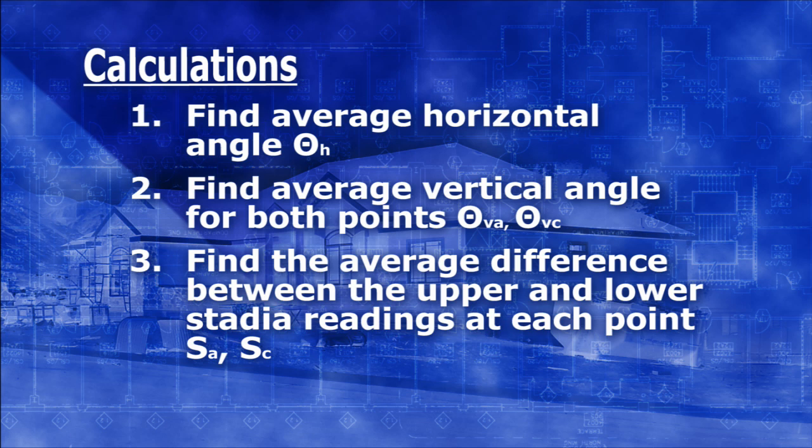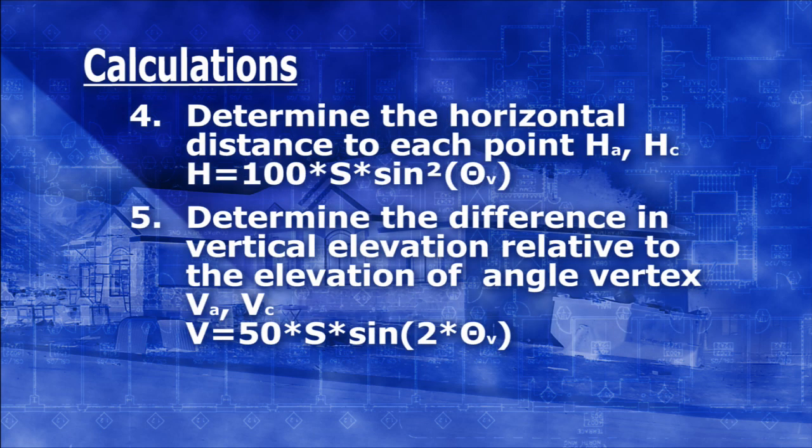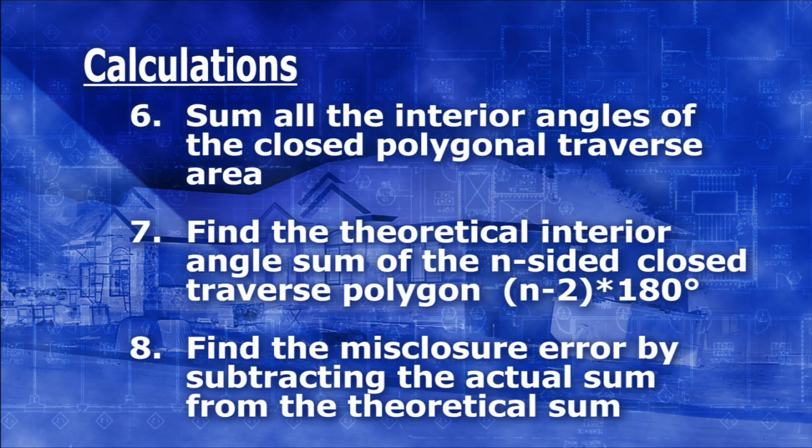Third, find the average difference in stadia readings for each point A and C. Using the average values found in steps two and three for the vertical angle and stadia reading difference, proceed to determine the horizontal distance to each point as well as the differential elevations.